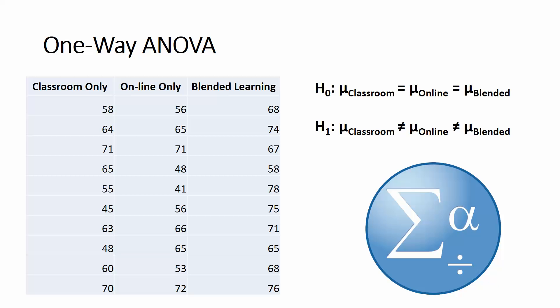So my classroom only students — I've got ten of those — and my scores are listed at the end of a test here on the first column on the left-hand side of the screen. The middle column contains the test scores for my online only students, and the third column contains the test scores for my blended learning students. I'd like to know if there's a significant difference between these three groups.